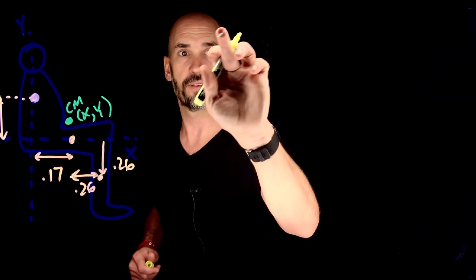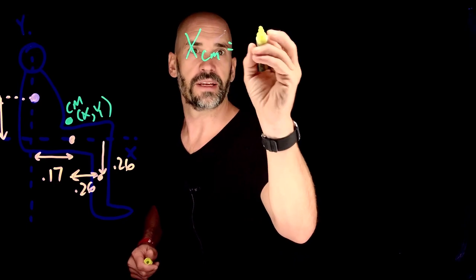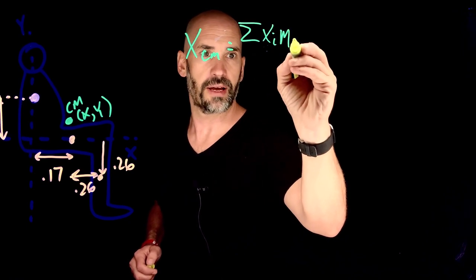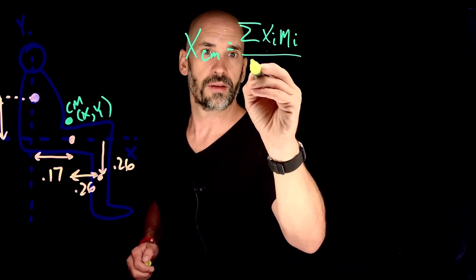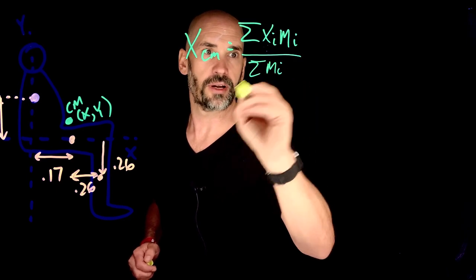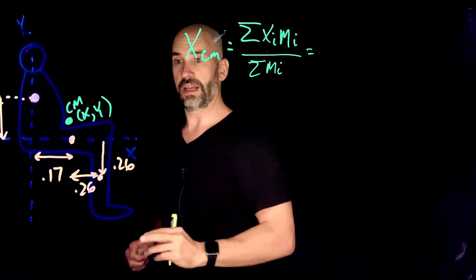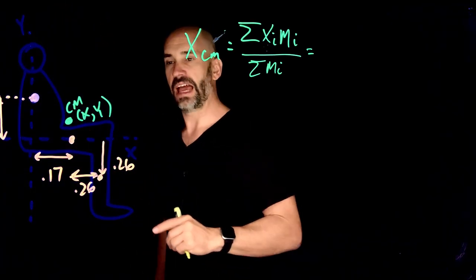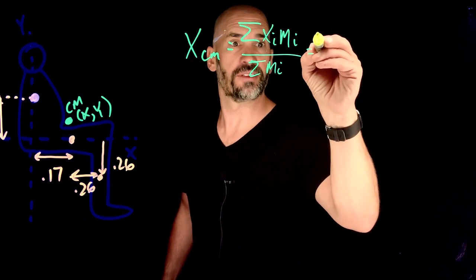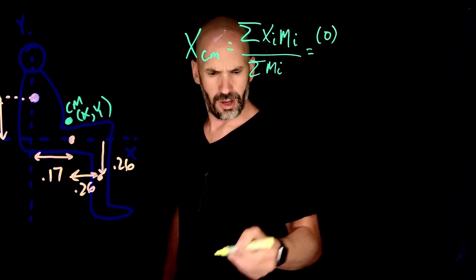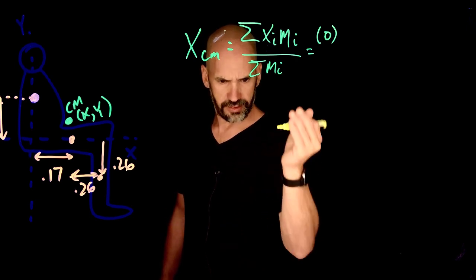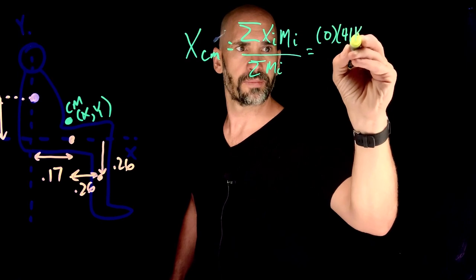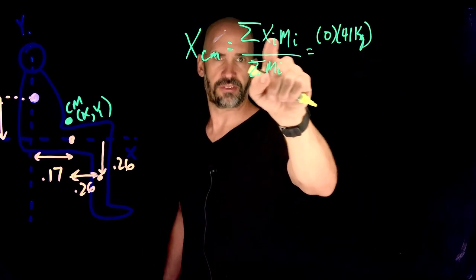So my x center of mass is going to be the sum of my x_i's times my m_i's over sum of all my masses. Now I have three particles. So what is the x coordinate of the upper body? The x coordinate is zero. So my first one is just going to be zero times the mass of the torso, neck, and head, which is 41 kilograms. Not that it matters because that's just going to go to zero.